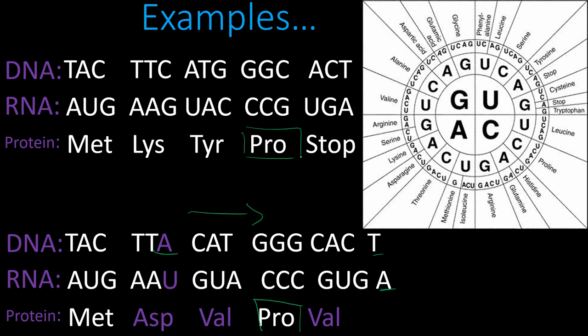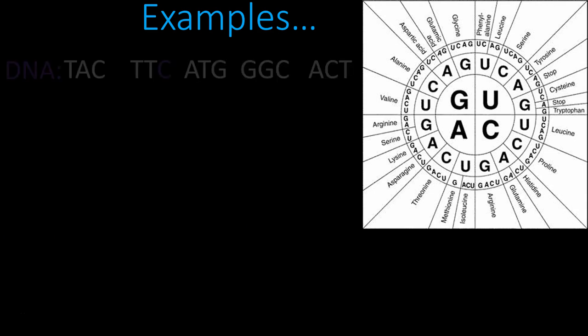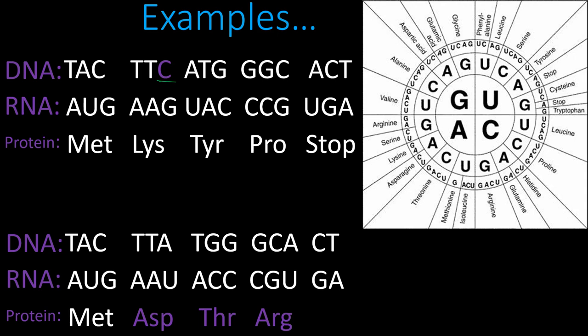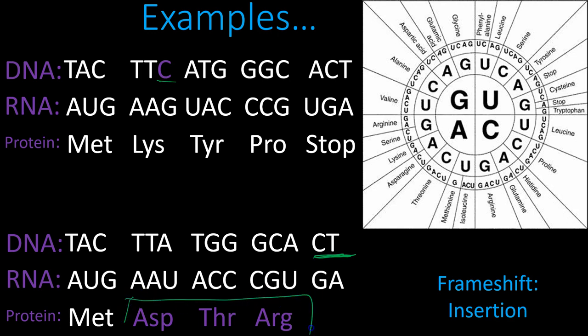Everything after that mutation has changed — except proline by coincidence — making this a frame shift insertion. If I delete a nucleotide instead, that would be a frame shift deletion. I can identify it as a deletion because there should be three letters but there are only two, so one was taken away. Every amino acid after that mutation is altered, confirming this is a frame shift — and it's much more detrimental than a point mutation.